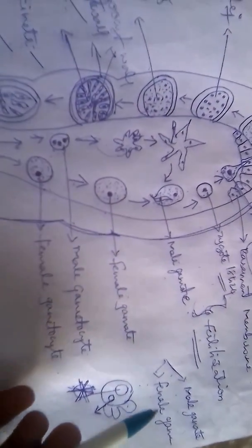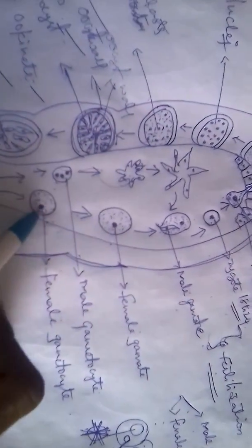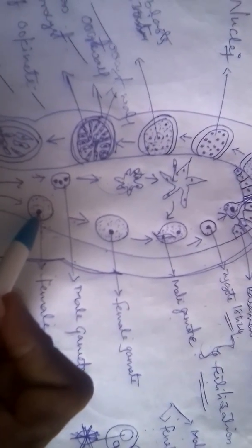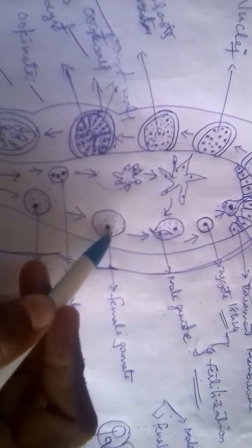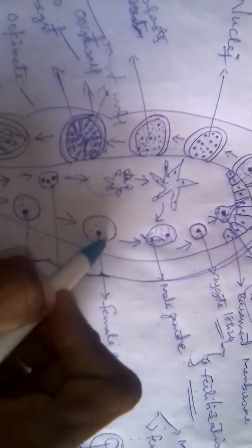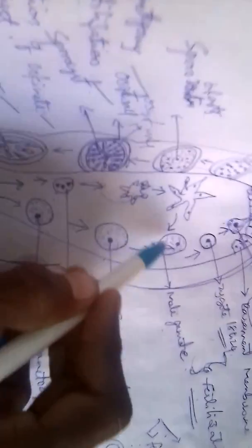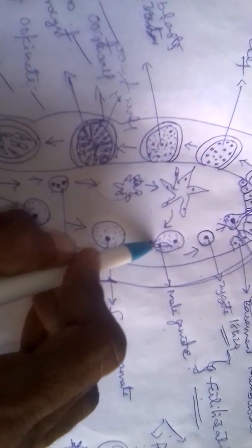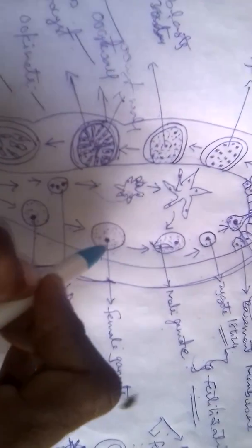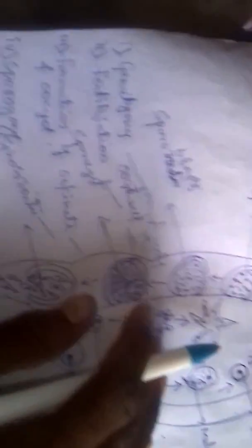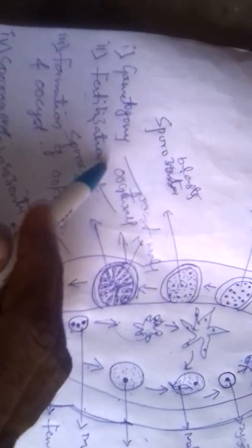Now let's see about the female gamete. The female gametocyte, after some stages, will develop into the female gamete. The female gamete and male gamete then fuse together. Gametogony is now complete.